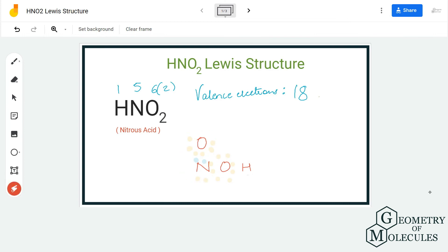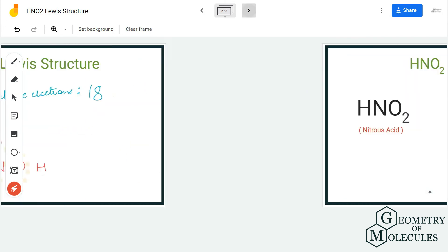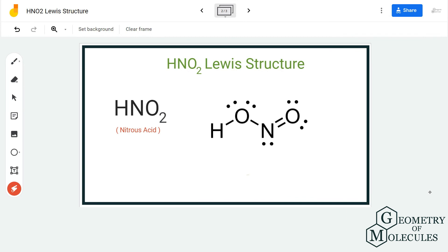Now if you look at the Lewis structure, all atoms have complete octets. Hydrogen has two valence electrons in its outer shell, each oxygen atom has eight valence electrons in its outer shell, and even nitrogen atom has eight valence electrons. So as all the atoms in the structure now have complete octets, this is the relevant Lewis structure for HNO2.